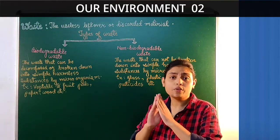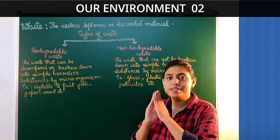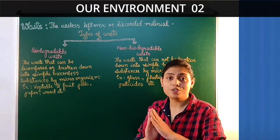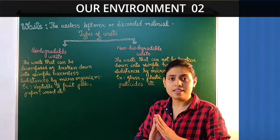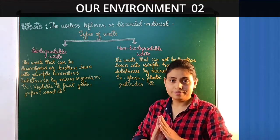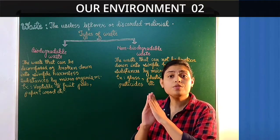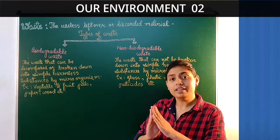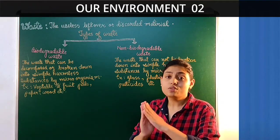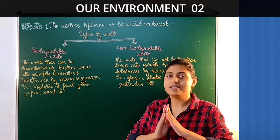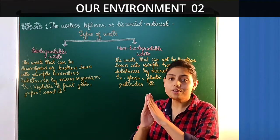How do microorganisms break down or decompose this waste? They produce certain enzymes which help in the digestion or breaking down of these waste materials into simple harmless substances, in the same way as we digest our food. Similarly, microorganisms produce enzymes which help in breaking down waste into simple harmless substances. The waste on which these enzymes can work is called biodegradable waste.